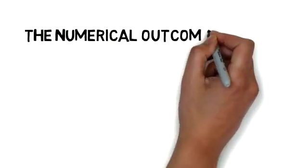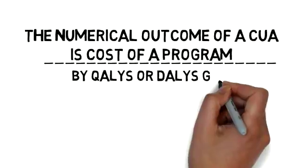The numerical outcome of the CUA is a cost of a program divided by QALYs or DALYs gain.